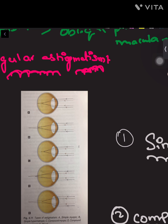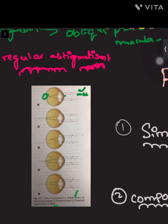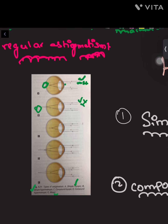In simple astigmatism, looking at the diagram: in simple myopic astigmatism, the horizontal rays are reaching the retina and forming an image, but the vertical component is not reaching the retina and is before it. In simple hypermetropic astigmatism, one component reaches the retina but the other rays go behind the retina.